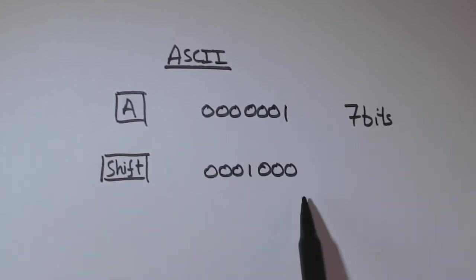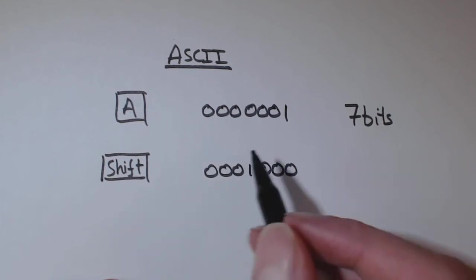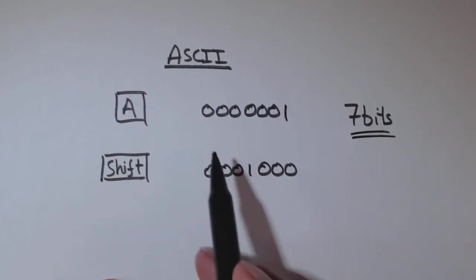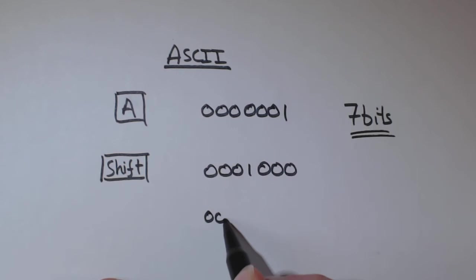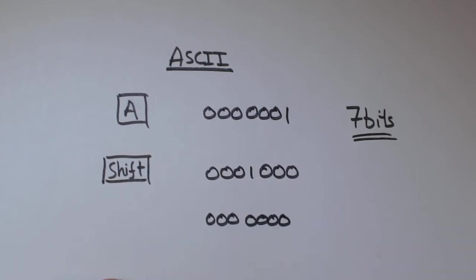So we've got 7 bits and each combination, each unique combination, can be a different character on the keyboard.